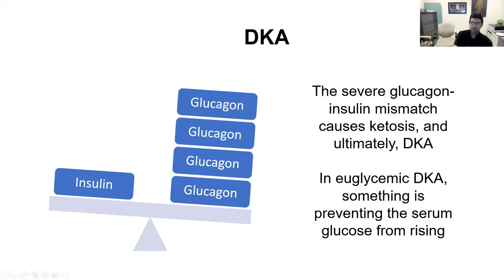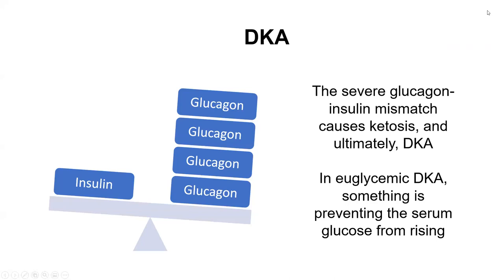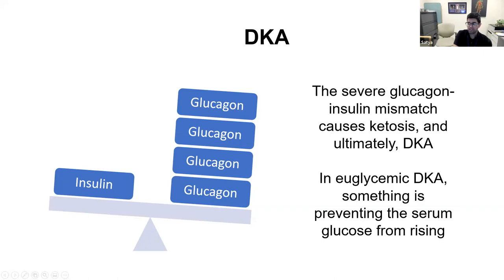When you have a severe glucagon-insulin mismatch, you get ketosis, and that's what leads to DKA. DKA is truly when you have absolute insulin deficiency — essentially a massive glucagon-to-insulin ratio imbalance.